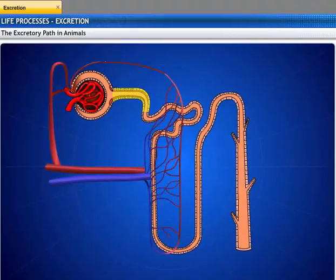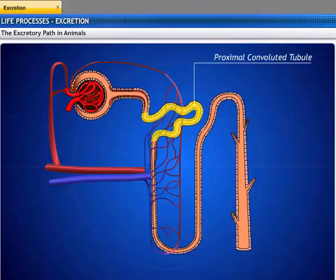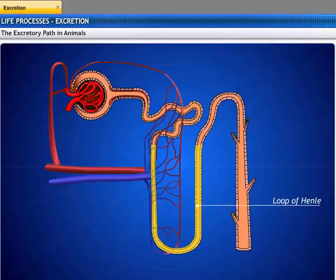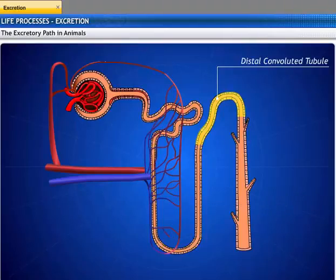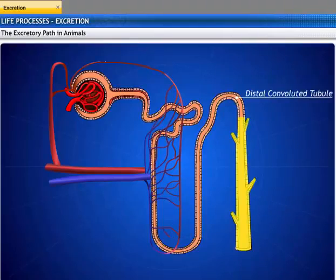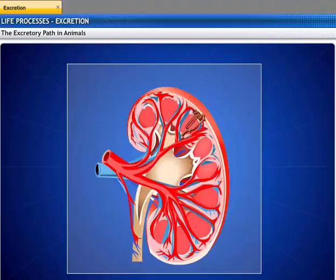The renal tubule leads away from the Bowman's capsule and becomes highly coiled to form the proximal convoluted tubule. The tubule makes a hairpin loop called the loop of Henle and joins the distal convoluted tubule. The distal convoluted tubule opens into a collecting duct, which passes into the renal medulla.